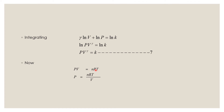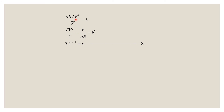Now from pV equals nRT, rearranging gives p equal to nRT over V. Substituting this p in equation 7, we get nRT over V times V raised to gamma equals k. Since n and R are constants, taking them to the other side gives a new constant k dash. Bringing up the V terms, we finally get T times V raised to gamma minus 1 is equal to k dash — equation 8.